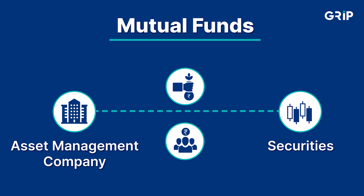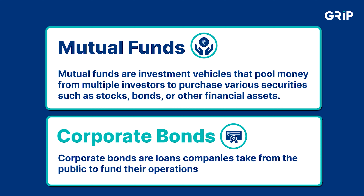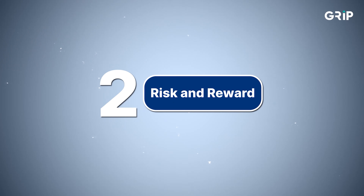Now let's talk about the significant points of differentiation. Number one, investment vehicles: mutual funds are investment vehicles that pool money from multiple investors to purchase various securities such as stocks, bonds, or other financial assets, while corporate bonds are loans companies take from the public to fund their operations.